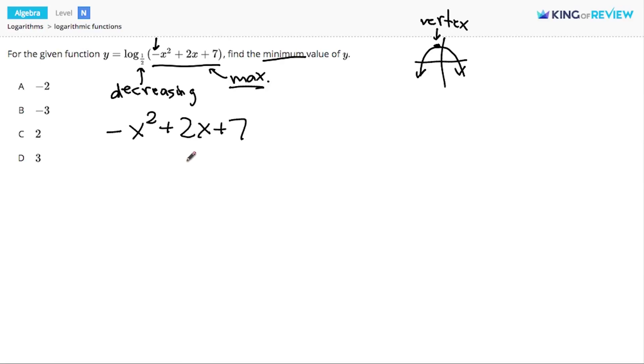We find vertex form by completing the square. So to start, I'm going to focus on the two terms that have x's in them. I'd like to factor out this negative sign, factor out a negative 1, so that these two terms become x squared minus 2x.